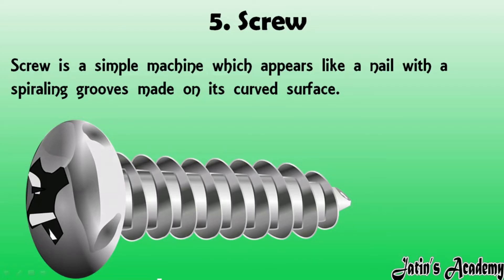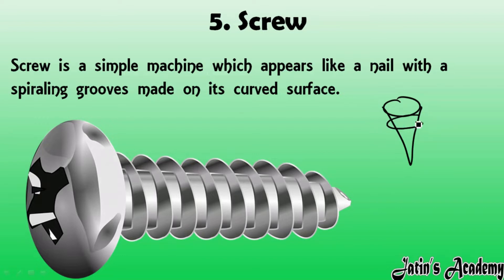A screw is also a simple machine which appears like a nail, but it has spiraling grooves made on a curved surface. As you can see here, these grooves are present on the curved surface. Whenever grooves are present on a nail-like rod, that is known as a screw.